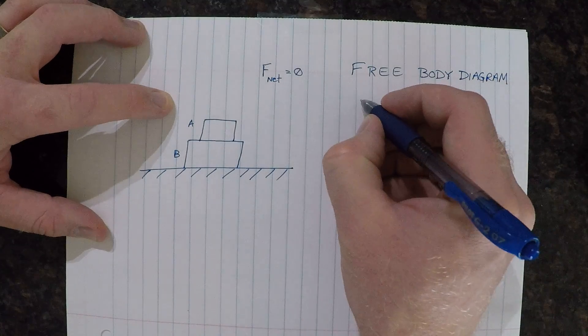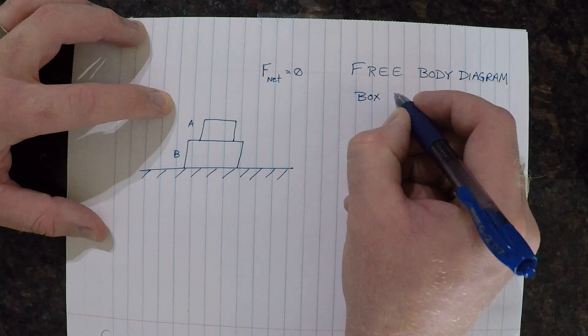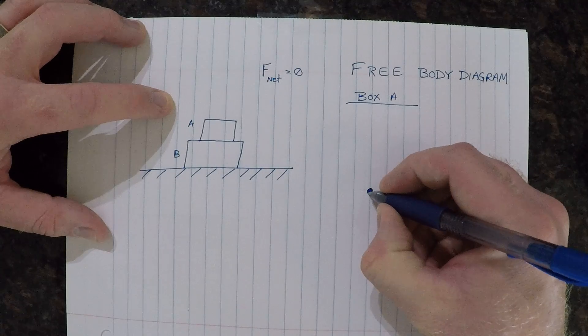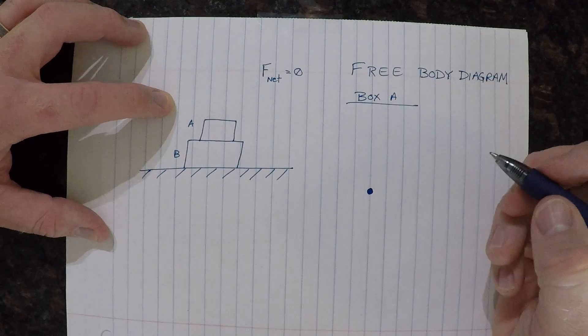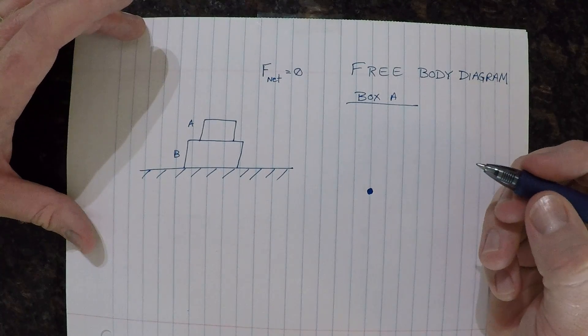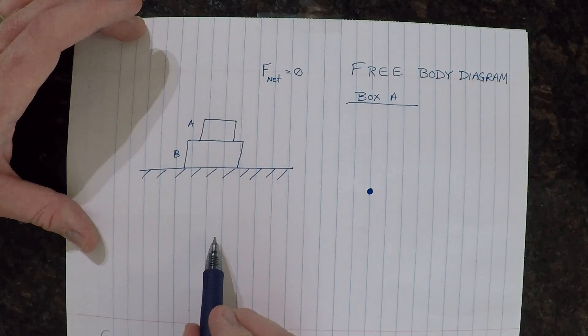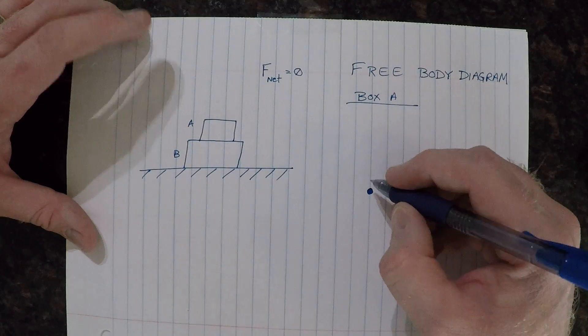For box A, all we need to do is draw a dot to represent the box. We know that there is a weight, which is the gravitational pull of the Earth pulling down on box A.